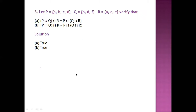In the last, third question: if P = {A, B, C, D}, Q = {B, D, F} and R = {A, C, E}. We have to verify two statements — whether these are true or false.